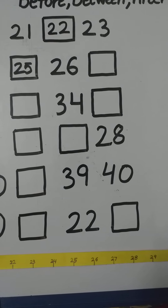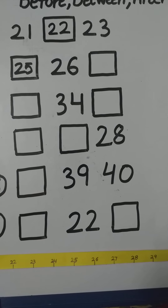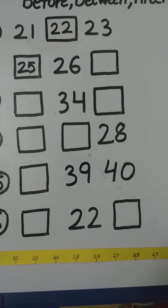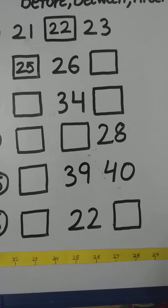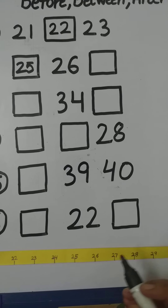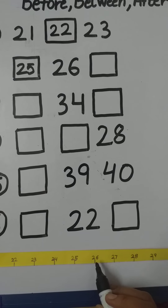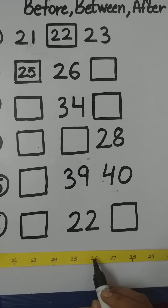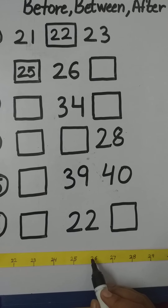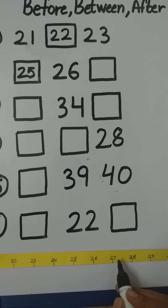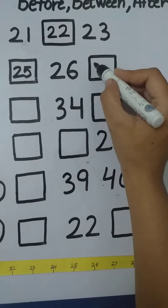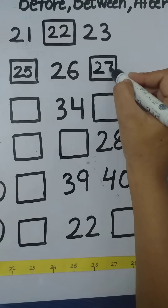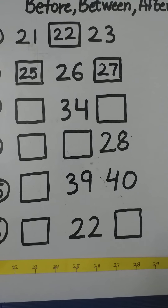And for the after number, we move towards the right side. So what comes after 26? 27. So we have to write here 27. Very good.